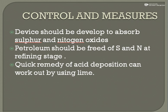Let's look at the last point for today: control and measures. How can we control acid rain? First, devices should be developed to absorb sulfur and nitrogen oxide. Second, petroleum should be freed of sulfur and nitrogen at the refining stage — sulfur and nitrous oxide must be removed during processing of fossil fuels. Third, a quick remedy for acid deposition can be achieved by using lime, that is CaO, which can quickly neutralize acid rain, but it is proved to be very, very costly.